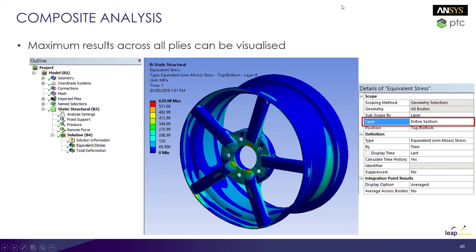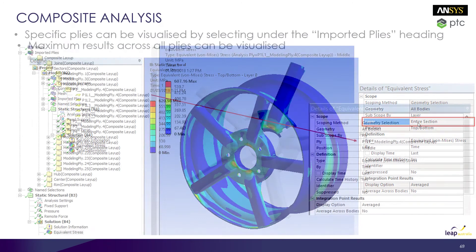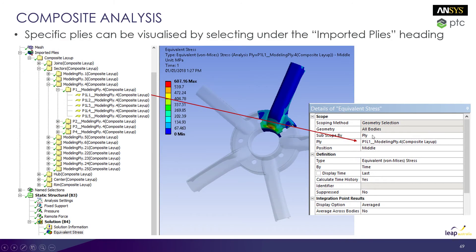Once we have run our analysis and want to post-process results, we can visualize results as a maximum for every single ply of our structure. With different orientations through the thickness, different plies can be carrying different proportions of the loading. If we just want an overall trend, we can visualize the maximum result across all plies by scoping our result by layer to the entire section in the details window. Alternatively, we can scope to a specific ply to really dive into the load distribution of each part of the structure — selecting whichever ply we want from the model tree.